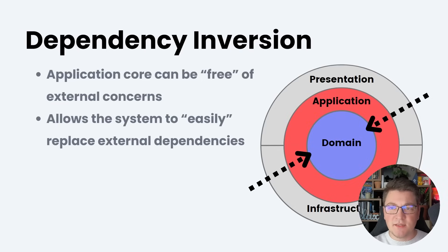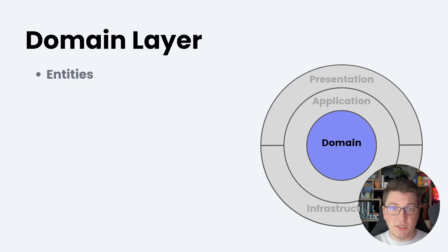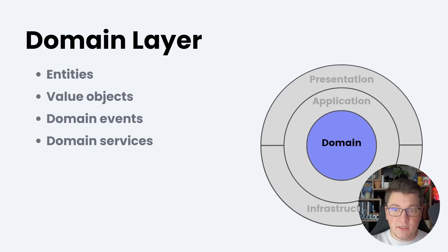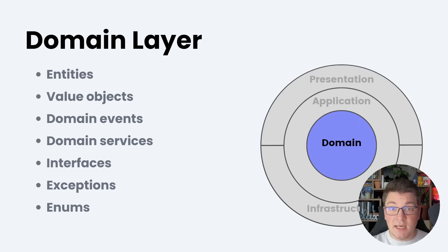Now let's discuss the individual layers of the clean architecture and what we should be placing inside of these layers. Beginning with the domain layer, which sits at the core of the architecture: here you will see things like domain entities containing your business rules, value objects, domain events, domain services, and interfaces for any abstractions required by the domain layer — such as repository interfaces. You'll also have exceptions if you need to express some situations in your domain, and last but not least, you can have enums in the domain layer.